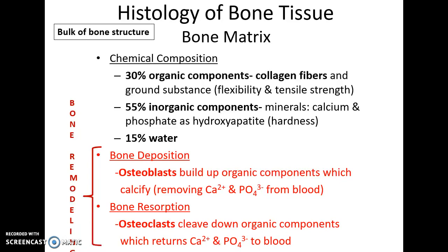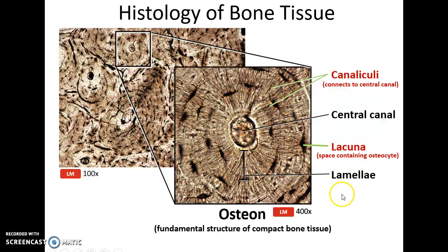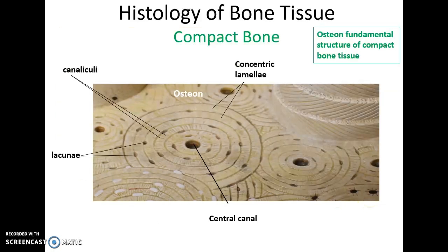In compact bone tissue there is a recurring structure called an osteon. Each osteon has a central canal — a space filled with nerves and blood vessels — surrounded by rings of material called concentric lamellae. Dark spots called lacunae are little spaces housing the osteocytes. Connecting the osteocytes to the central canal's blood vessels are canaliculi — tiny tubes filled with projections from the osteocyte.